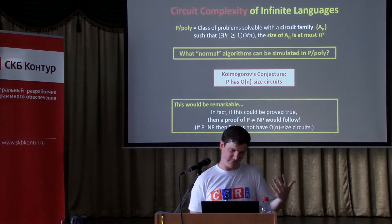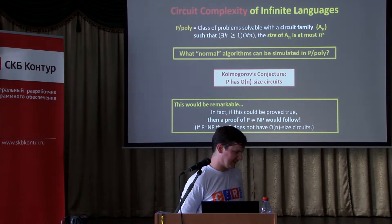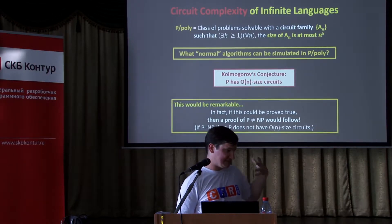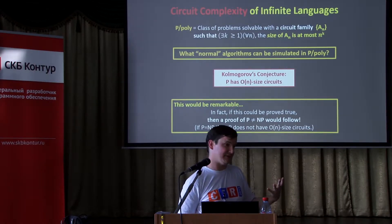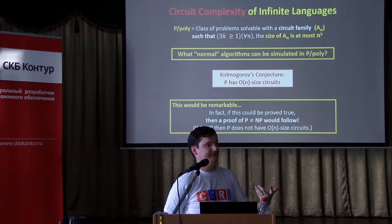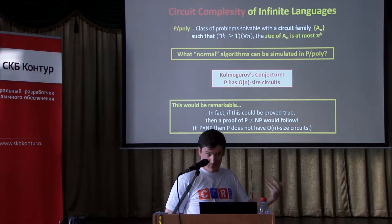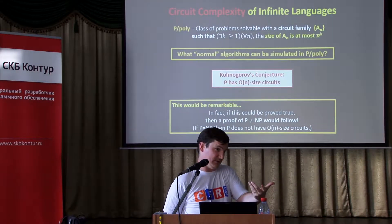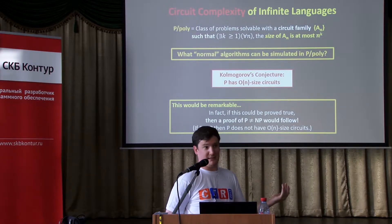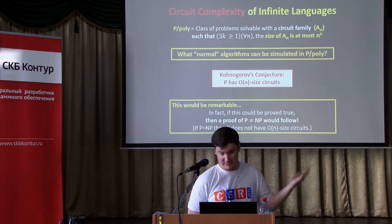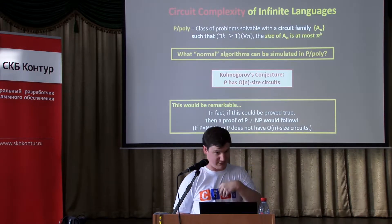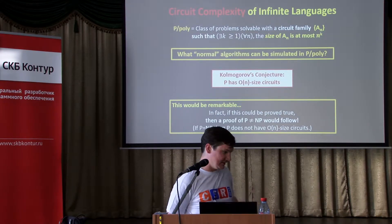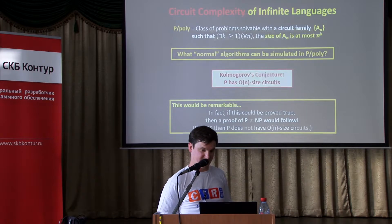So we were talking about circuit complexity — solving problems when you have this infinite family of circuits, one for each input length. From one circuit, say Cn to Cn+1, those circuits could be completely unrelated. It could be that for different input lengths, you have completely different circuits, so we make no bounds on the computability of these circuits.